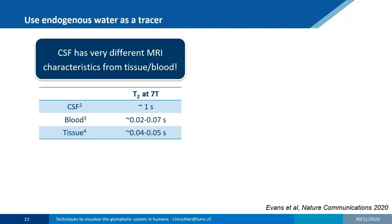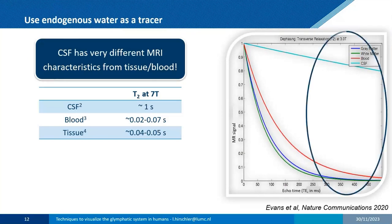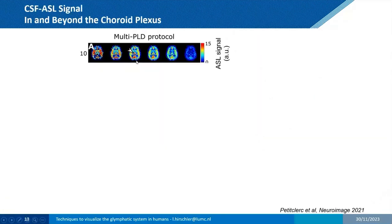CSF has very different MRI characteristics from blood and tissue — notably very different T2 values. The group of Jack Wells in London suggested that using a very long echo time, you could disentangle the blood signal from the CSF signal. In mice, they showed you could measure baseline perfusion, and with the long echo time you only see the ventricle section. In Leiden, we adapted that to humans.